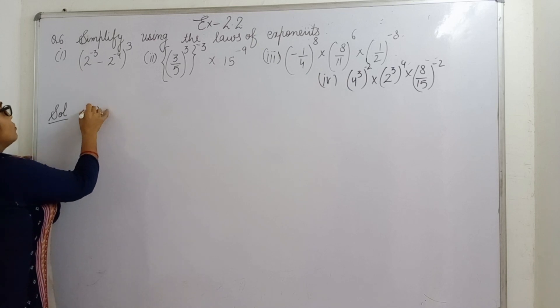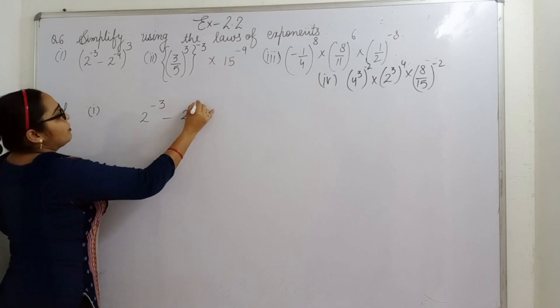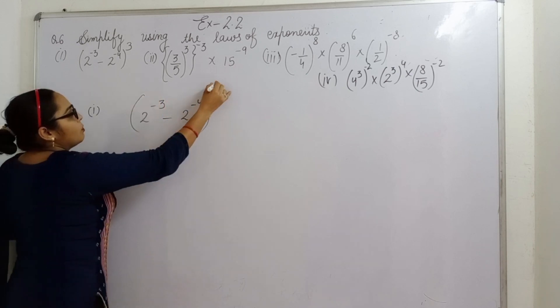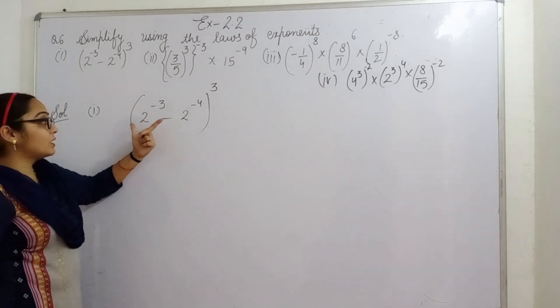So let's solve the first one: 2 raised to power minus 3, 2 raised to power minus 4, and whole power is 3. Firstly we have to solve brackets, whatever is in the bracket.